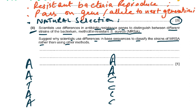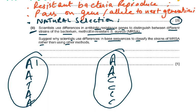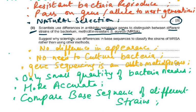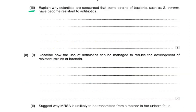We compare the base sequences of different strains. For example, one might have A-A-T-A-A and another has A-A-C-C-C, so these base sequences are different — one is one type of bacteria and the other is another type. We have computer software to analyze all this. So: no difference in appearance, no need to culture bacteria, gene sequencing is an automated process, only small quantity of bacteria needed, much more accurate, and you can compare the base sequences of different strains.